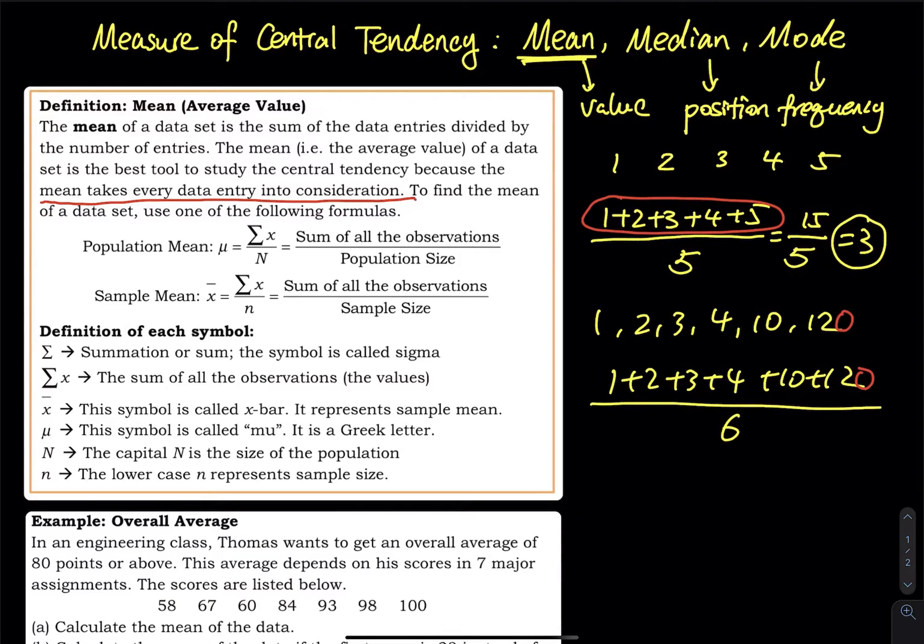To find the mean of a data set, use one of the following formulas. We have one for population and one for sample. If the data represents the population, you follow that formula; if it represents a sample, you follow that formula.